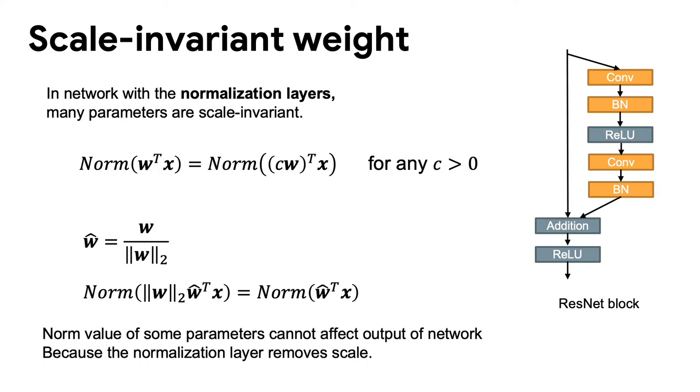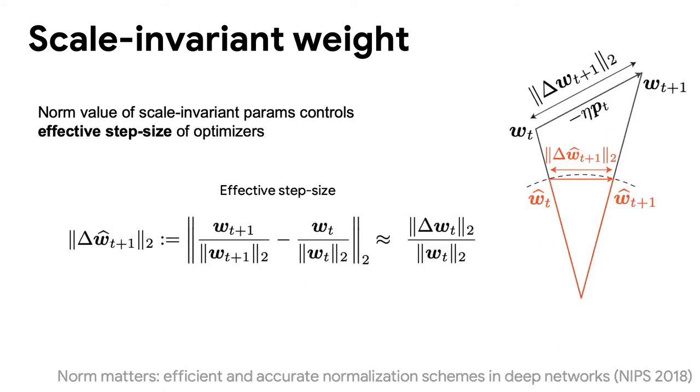For example, in convolution layer and batch norm layer pair in residual network, the scale of the convolutional weight cannot change the output, because batch normalization layer removes scales of response and makes unit variance output. The norm value of scale invariant's parameter cannot change the output, but contributes to training process.